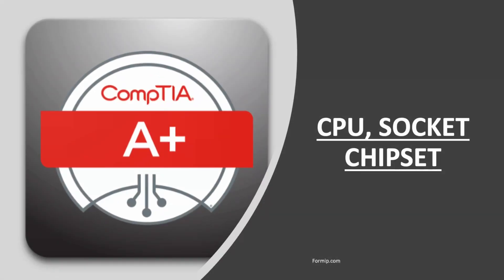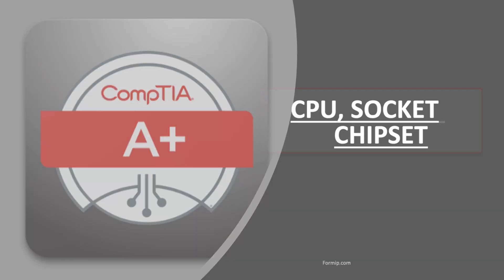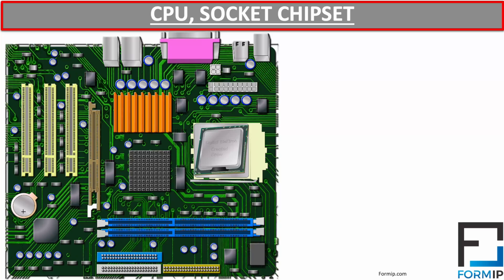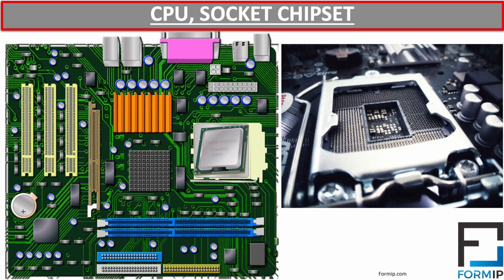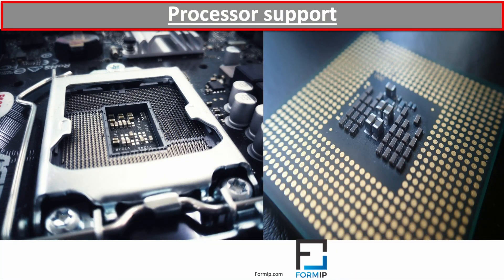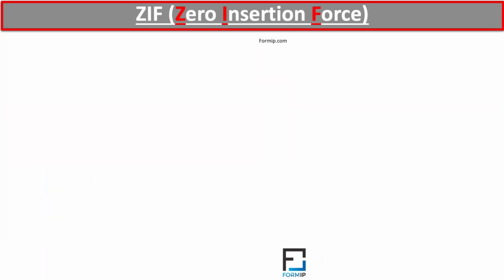In this course, we're going to talk about CPU, socket, and chipset. The CPU socket is the place on the motherboard where the CPU is placed. It is a square bracket made of plastic or metal, which contains several holes to accommodate the CPU pins. With the contact of these pins in the socket holes, this is what provides physical and electrical contact between the motherboard and the CPU.